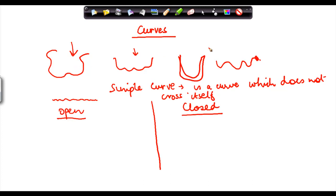This curve also doesn't cross itself. Now suppose I had something like this. Now this curve basically crosses itself at this point. So this is not a simple curve. A simple curve is a curve which does not cross itself.